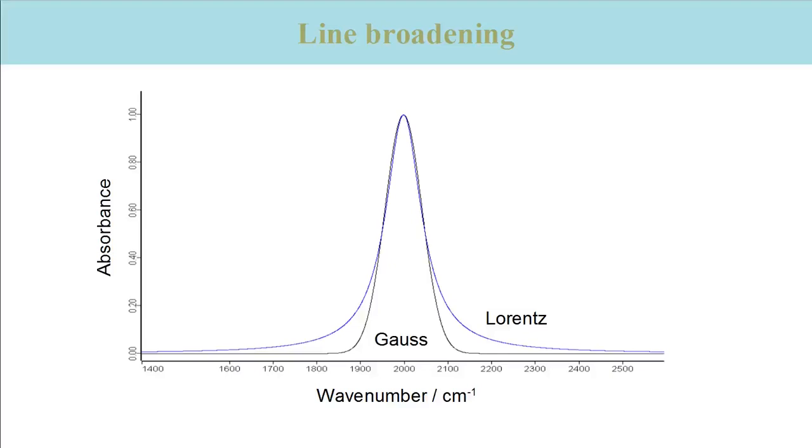This slide shows a comparison between a Lorentzian curve in blue and a Gauss curve in black. The two curves have the same width at half height, approximately here. It can be seen that the Lorentz curve is narrower around the top but broader at the bottom of the curve.